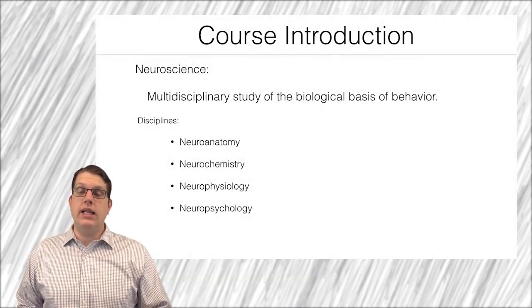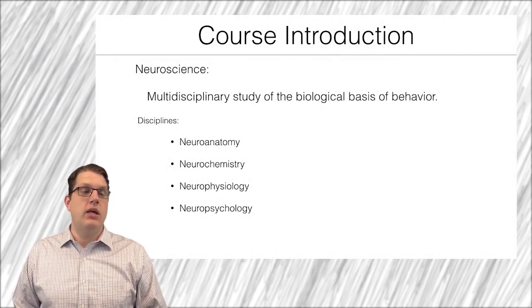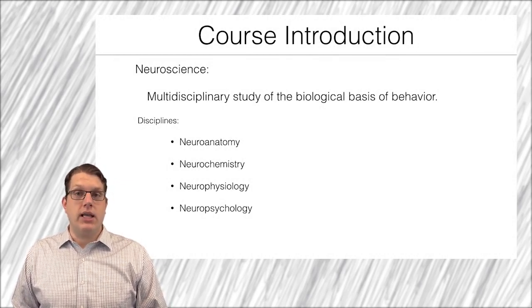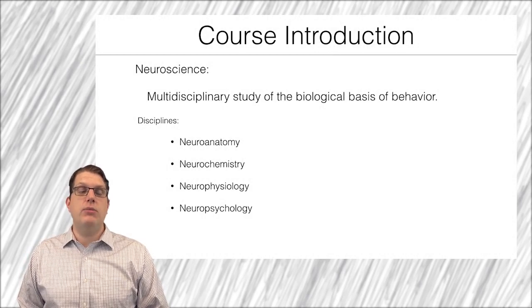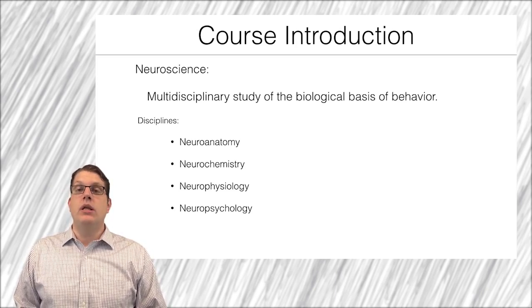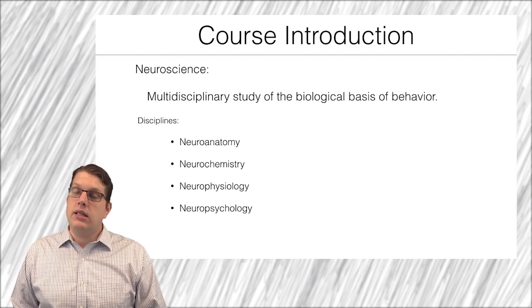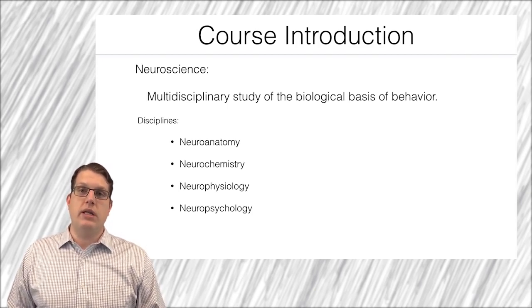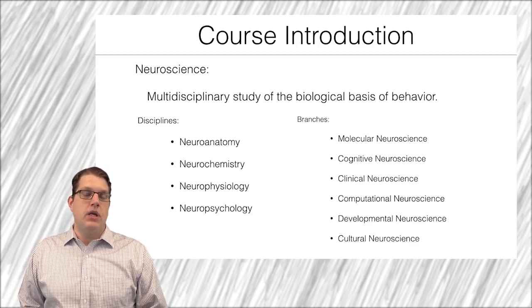So what is neuroscience? Neuroscience is the multidisciplinary study of the biological basis of behavior. It includes many disciplines, including neuroanatomy, where neuroanatomists focus on delineating the structures of the human brain; neurochemistry, where chemists look at the chemical properties of communication in the brain; neurophysiology, where people study the electrical properties of the brain; and neuropsychology, where people try to elucidate cognitive domains and the structures that support those cognitive domains.